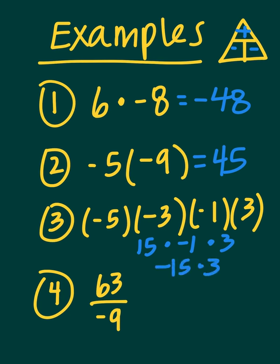So now we have negative fifteen times positive three. A negative and a positive give you a negative, so your final answer will be negative. Fifteen times three is forty-five, so the answer is negative forty-five. For number four, remember the fraction bar is the same thing as division — this is sixty-three divided by negative nine. A positive divided by a negative gives you a negative. Sixty-three divided by nine is seven, so the answer is negative seven.